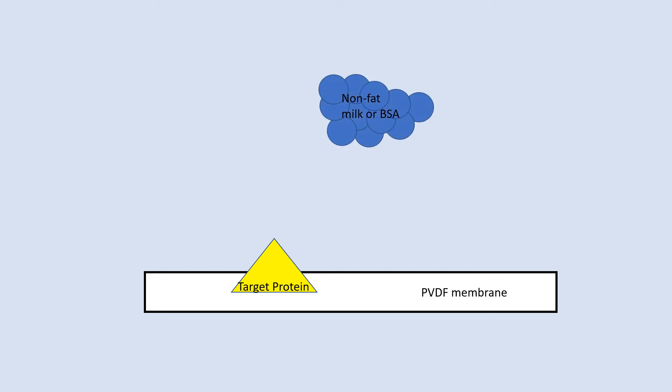After the protein has been transferred into the membrane, it will be incubated in a protein-containing solution such as nonfat dry milk or purified protein like bovine serum albumin. These proteins will cover any remaining area of the membrane which does not contain the target protein. Blocking the rest of the membrane will prevent any false signals and nonspecific binding that could appear when imaging.